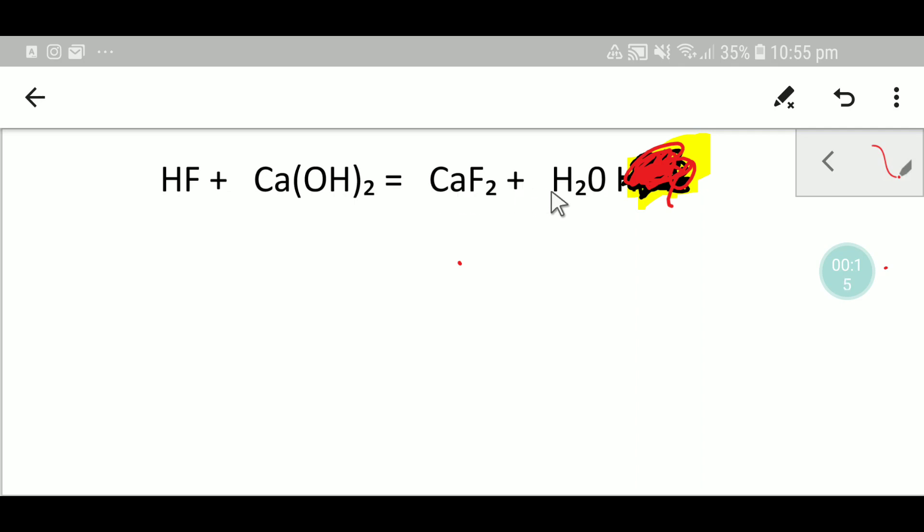To balance this reaction we have to adopt some techniques. Look here. In the left hand side of this equation we have OH, but in the right hand side we don't have OH. So we need to take OH in the right hand side and if we take OH in the right hand side this will help us to balance this reaction quickly.